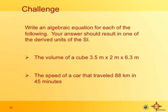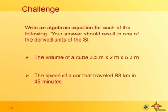The speed of a car that traveled 88 kilometers in 45 minutes — how would you calculate that? You could express it as kilometers per hour, so you'd convert 45 minutes to hours: that's three quarters of an hour. So 88 divided by 0.75 gives you about 117 kilometers per hour. You can use a calculator — just compute 88 divided by 0.75, since 45 minutes equals 0.75 hours.